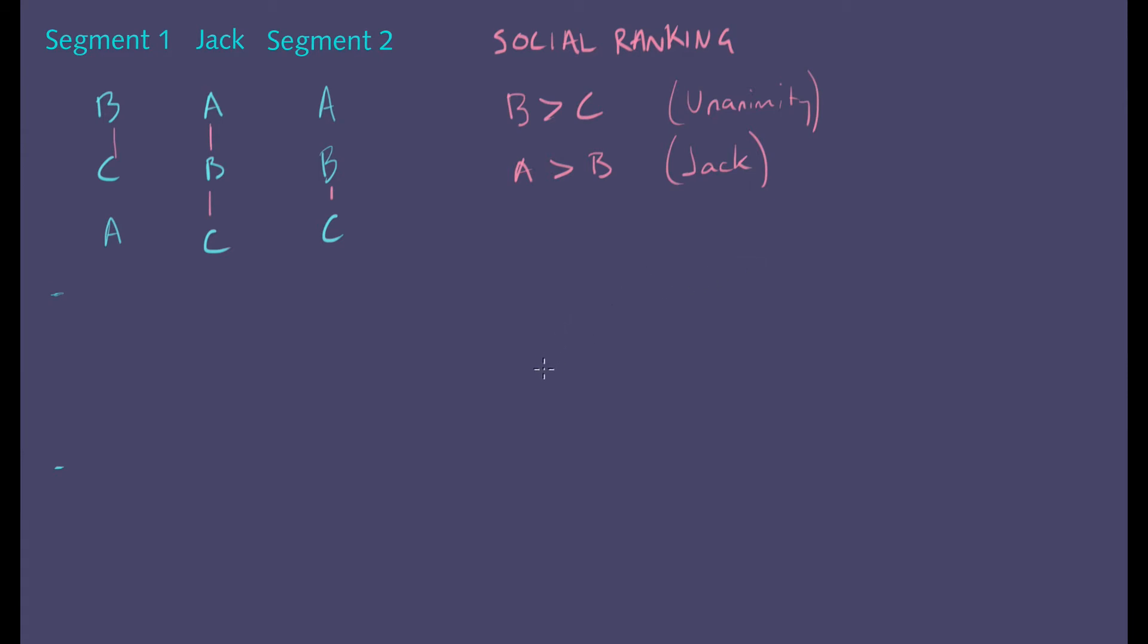Finally, we also know that transitivity is going to be a feature of our social welfare function. And we've got A is better than B and B is better than C. So by transitivity, A must also be better than C. So you could write it out as A is better than B is better than C is the overall social ranking. Good.